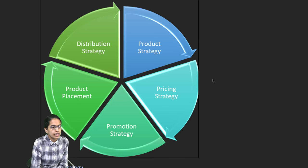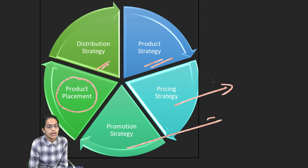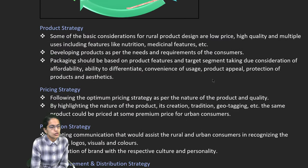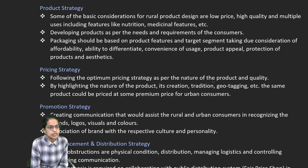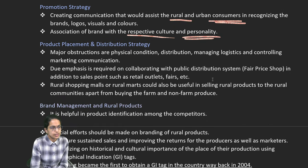For rural products, the first focus is product — how it can be well-placed — a good distribution strategy, a product strategy that fits market demands, good pricing, and then promotion. Product strategy talks about affordability, convenience, product appeal and protection of goods. Pricing strategy talks about geotagging and highlighting the nature of products. Promotion focuses on assisting rural and urban consumers across cultures and personality. Product placement involves working on the right distribution, logistics and controlled marketing.